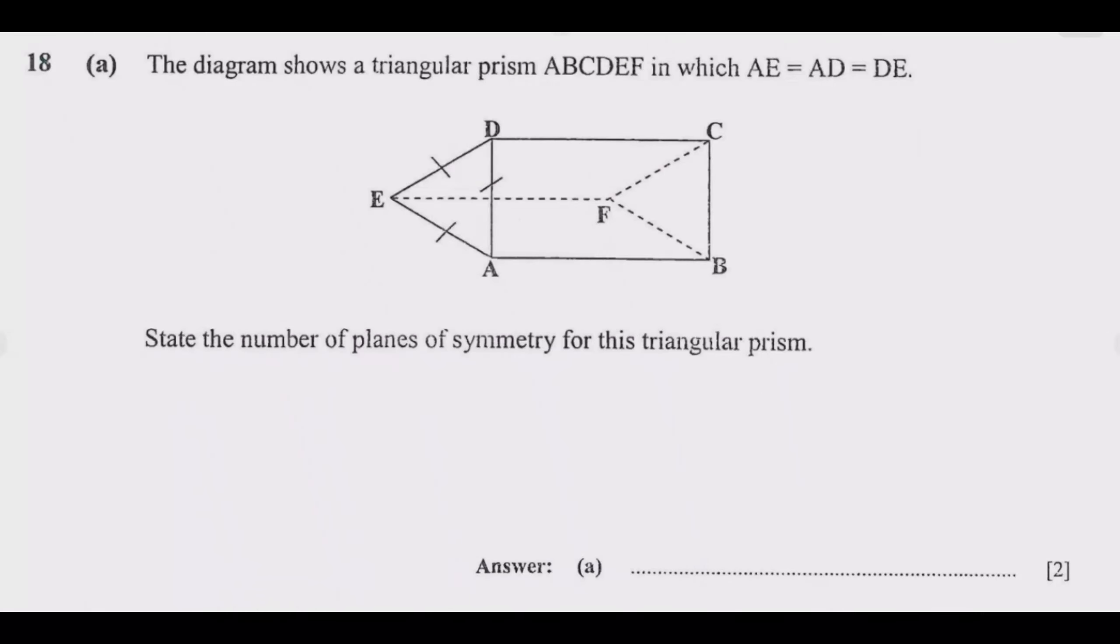We look at question 18a. The diagram shows a triangular prism ABCDEF in which AE equals AD equals DE. State the number of planes of symmetry for this triangular prism.